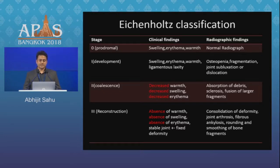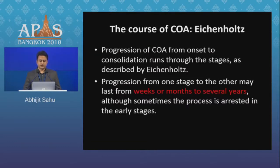In the coalescence stage, there is decreased warmth, swelling and erythema with absorption of debris, sclerosis and fusion of larger fragments. In the reconstruction stage, there is absence of warmth, swelling and erythema. On X-ray, there will be fibrous ankylosis, rounding and smoothing of bone fragments.